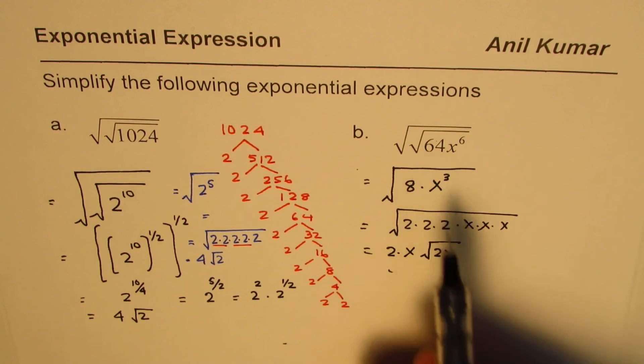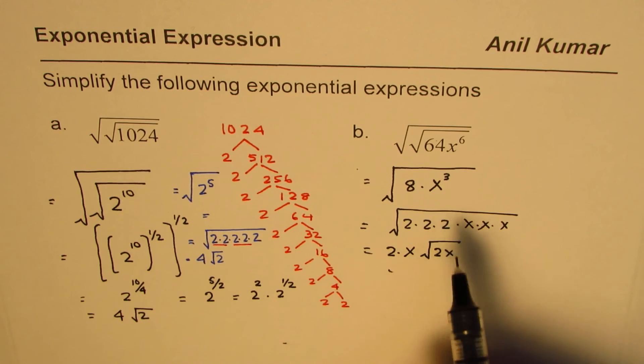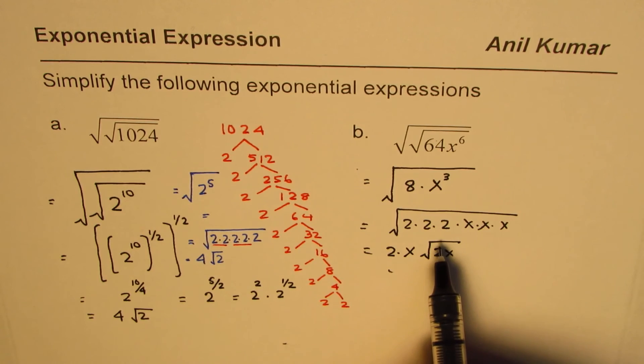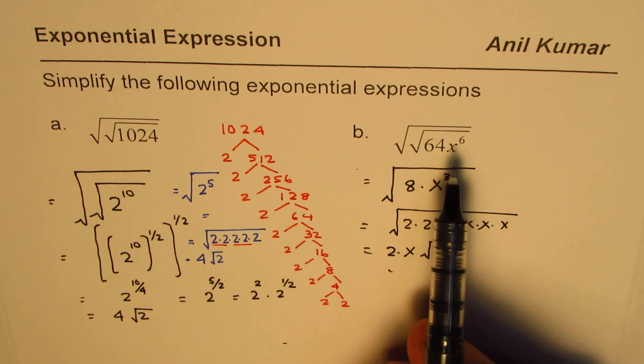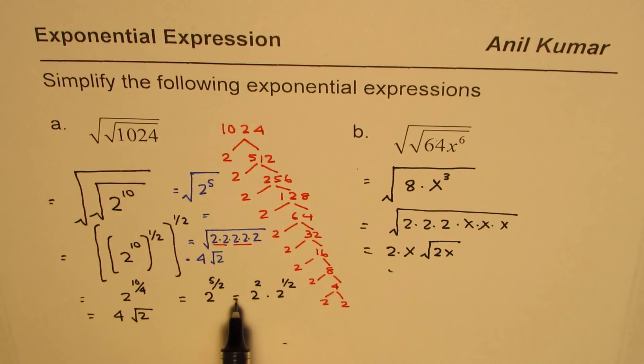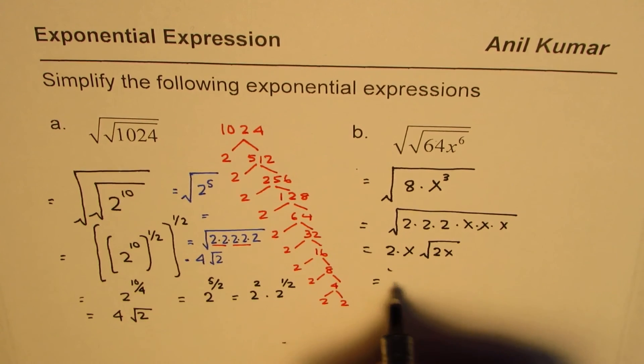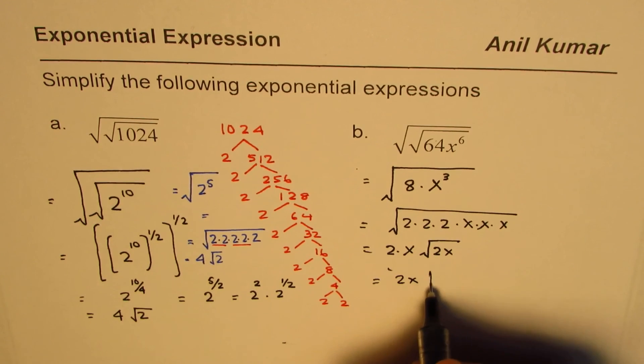Now I think the second method makes more sense, so I prefer doing it like this most of the time. But when things become complicated, when there are more than one expression involved, applying rules may be easier and faster. So here in this case, the answer is 2x square root of 2x.